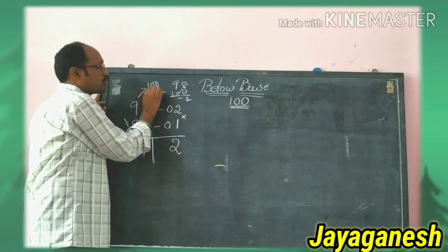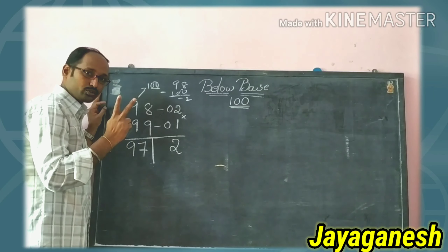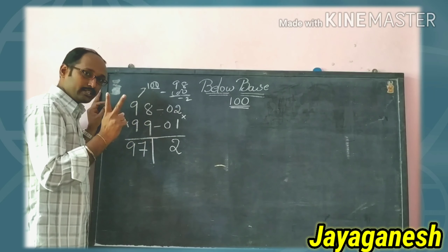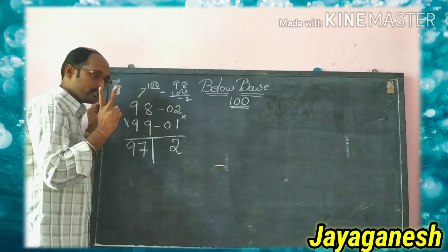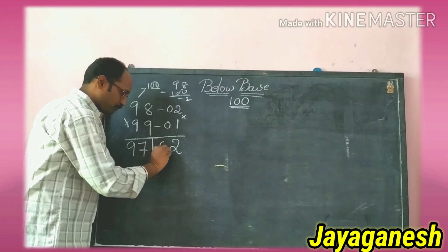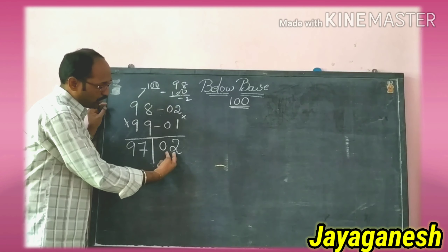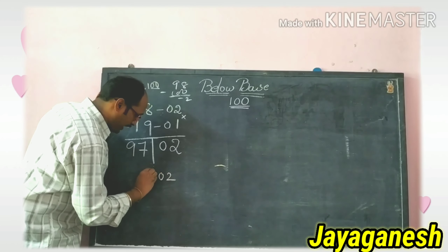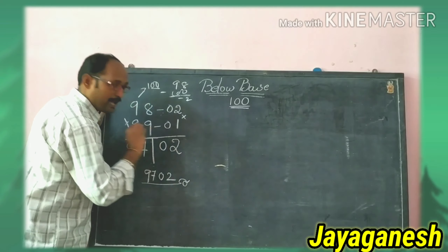In the base 100, there are 2 zeros, so the right side answer should be 2 digits. If there is only 1 digit, prefix a zero. So we drop 2 digits: prefix 0 to get 02, and the left side is 97. The answer is 9702. This is the effect of the balancing rule.